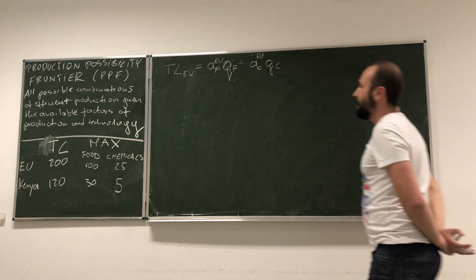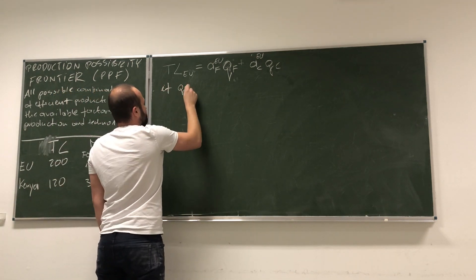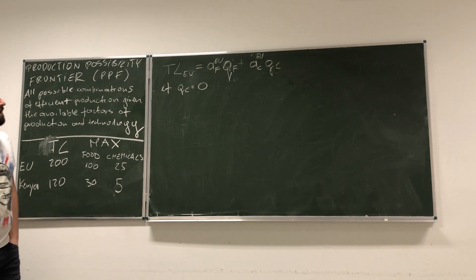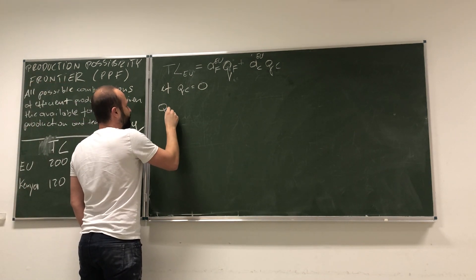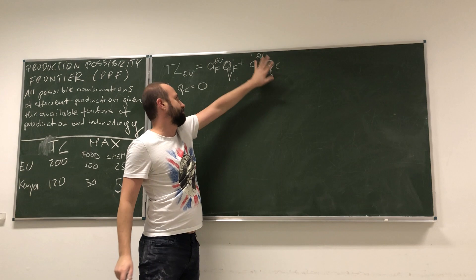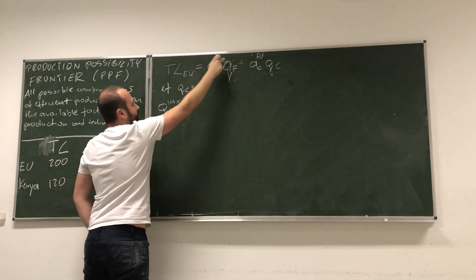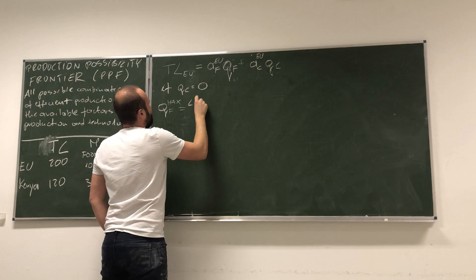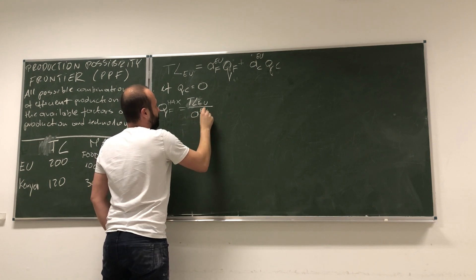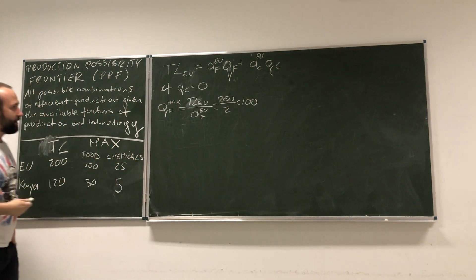Now we can actually calculate both endpoints. If Q_C is equal to zero, then in order to find out how much food will be produced at most, we simply assume that the chemicals term disappears. We then transform this by dividing by the labour requirement: TL_EU divided by A_EU_F. So this is 200 divided by 2, which is 100. That is why we get the 100-unit figure.